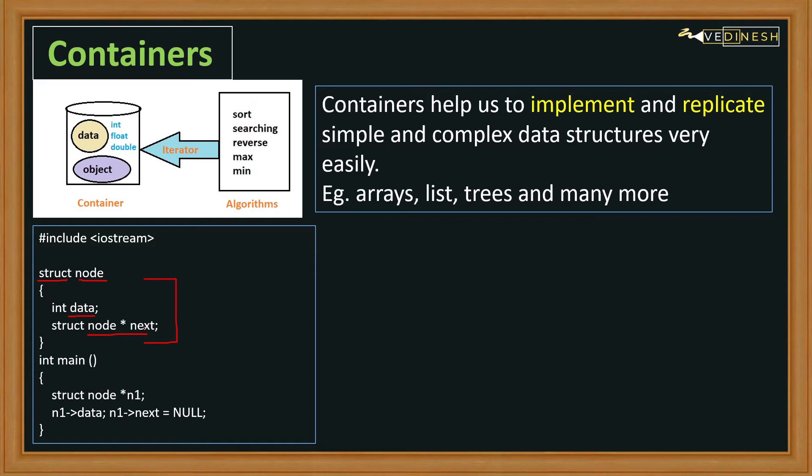Simple, right? Now after that, in the main function we are creating another pointer n1. This n1 pointer will help us to access this data variable and the next pointer in this way. So this is the basic overview of how, without STL, we're going to create a linked list. And this is just a single node, right?